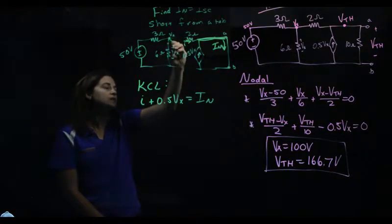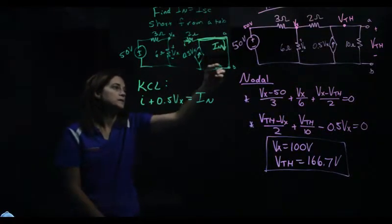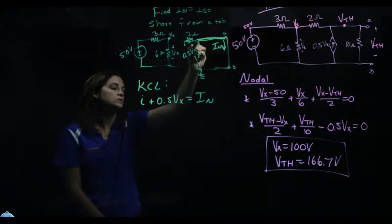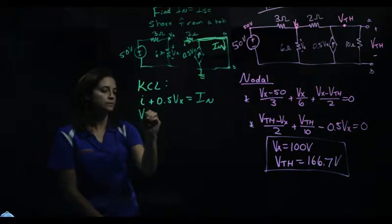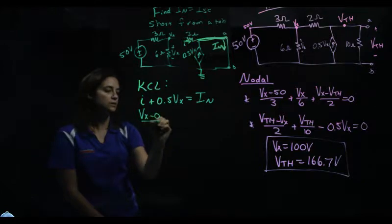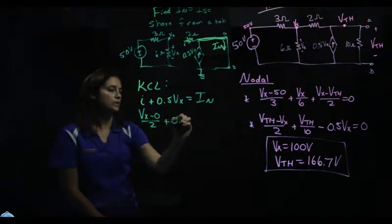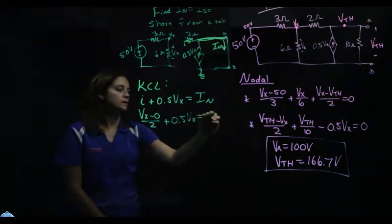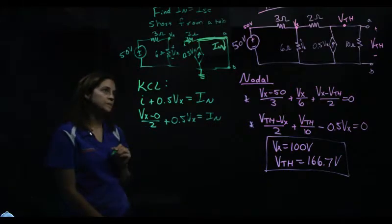I need Vx and I. Well, I is going to be Vx minus 0, because this node goes around to ground, over 2. So this is Vx minus 0 over 2, plus 0.5Vx equals I-Norton. So I need Vx.